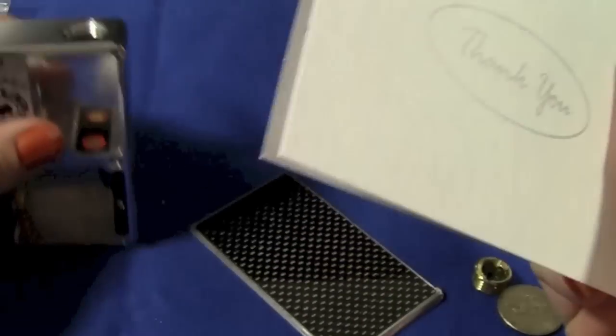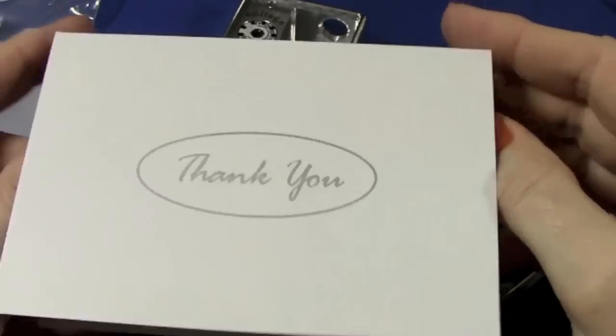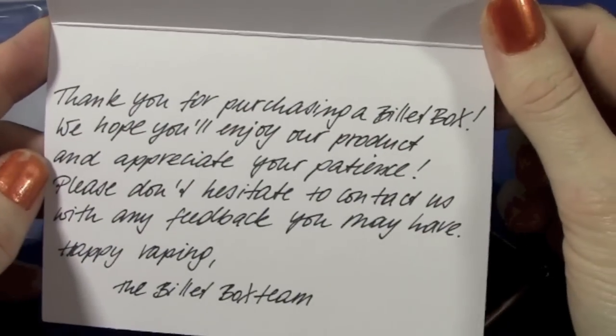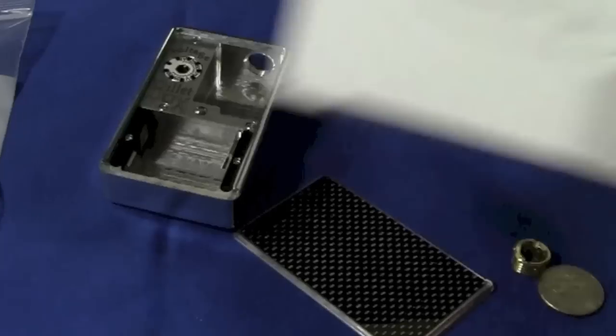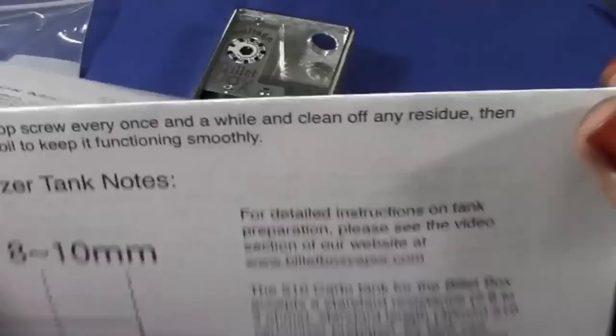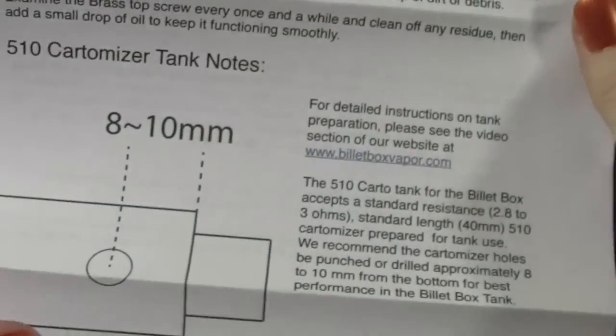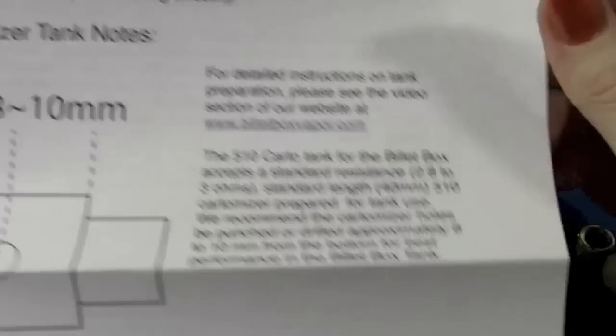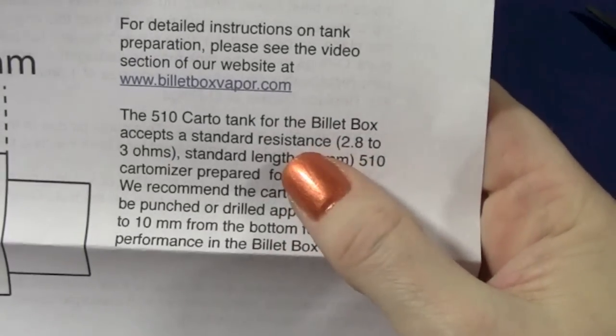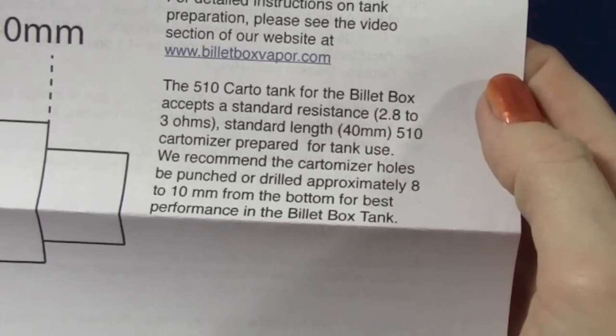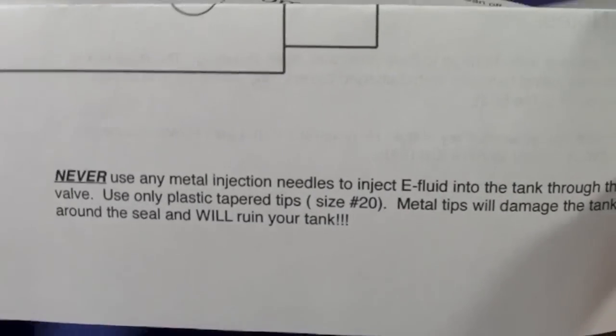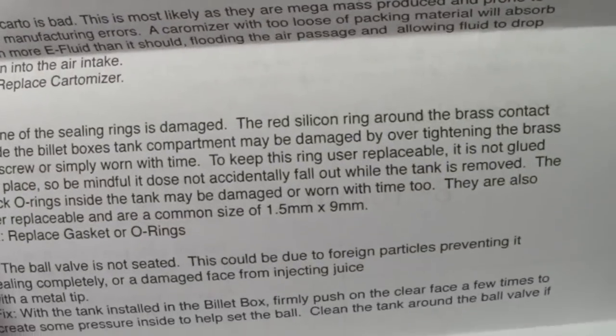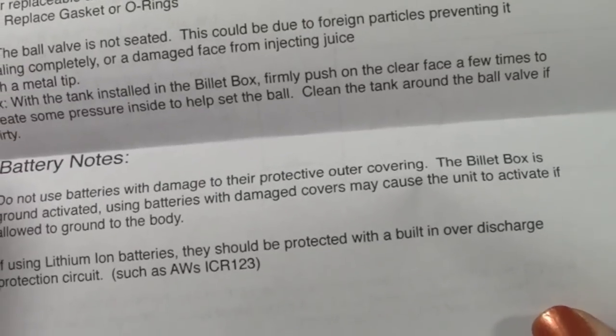Also comes with a little thank you note from the Billet Box team and a page of instructions. Tells you about where to put the hole in the cartomizer, between 8 and 10 millimeters, kind of cartomizer to use, what kind of batteries to use, kind of batteries not to use. Very clearly says do not use metal syringe needles to go around that little spring-loaded. It says what the replacement o-rings are for, some troubleshooting tips.